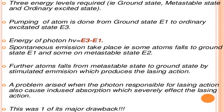Pumping of atoms is done from the ground state (E1) to the ordinary excited state (E3), so the energy of the photon is hν = E3 − E1. Spontaneous emission then takes place: some atoms fall to the ground state E1 and some to the metastable state E2. Further, atoms fall from the metastable state to the ground state by stimulated emission, producing lasing action. A problem arises when the photon responsible for lasing also causes induced absorption, which severely affects the lasing action — this is one of its major drawbacks.